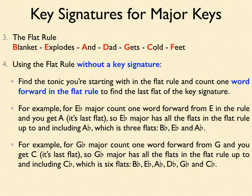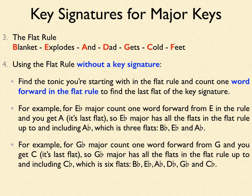For G flat major: find G in the rule, count one word forward and you get C. So G flat major has all the flats up to and including C flat — six flats in total: B flat, E flat, A flat, D flat, G flat, and C flat. That's "Blanket Explodes And Dad Gets Cold." Notice the flat rule is very different from the sharp rule: in the sharp rule you count back a letter in the musical alphabet, but in the flat rule you count forward a word in the flat rule itself. They are not complete opposites of each other.